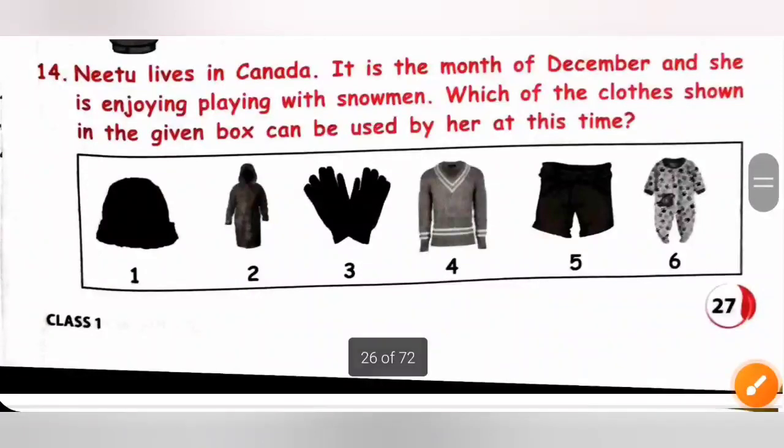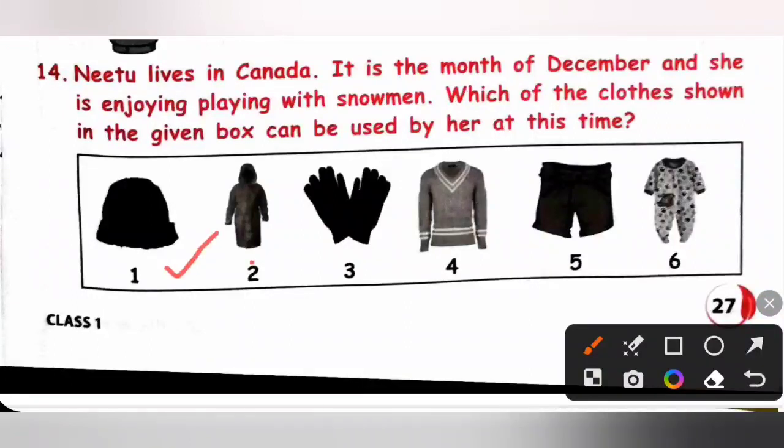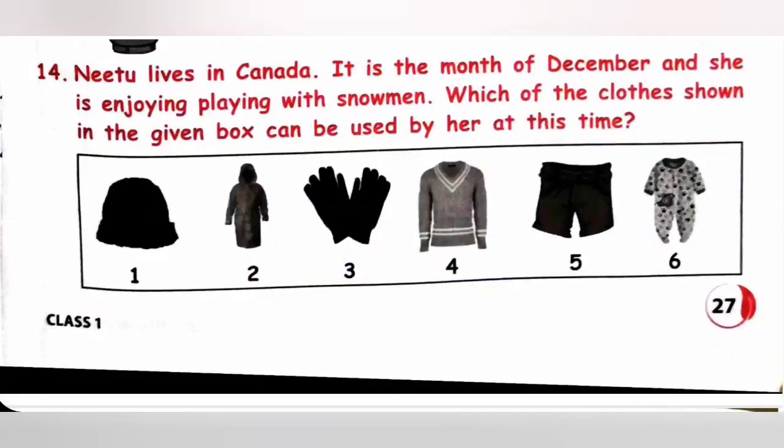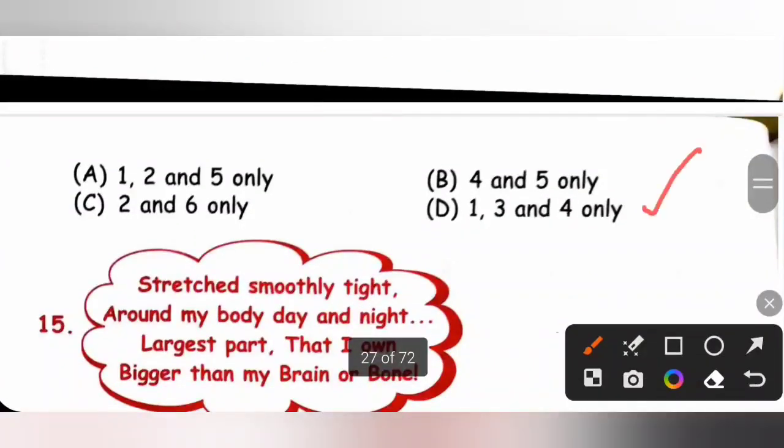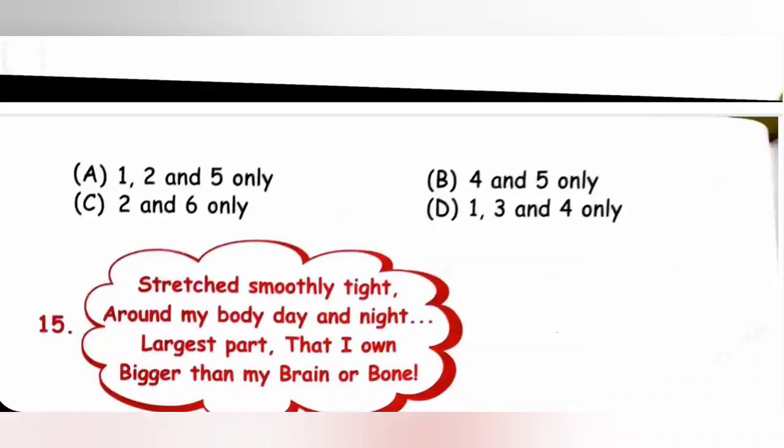Fourteenth. Neetu lives in Canada. It is the month of December. And she is enjoying playing with snowman. Which of the clothes shown in the given box can be used by her at this time? So, she will use woolen cap. And then raincoat. No. Gloves. Yes. Sweater. Yes. Shorts. And then infant dress. No. So, one, three, four. One, three, four. One, three, four. So, option D is the correct answer. One, three, four. Only. Option D.